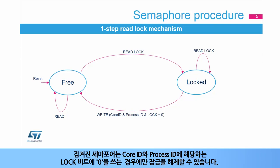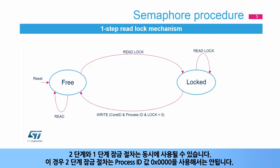A locked semaphore can only be unlocked by writing the lock bit to 0 with the corresponding core ID and process ID. The two-step and one-step lock procedures can be used concurrently. In this case, the two-step lock procedure must not use process ID value 0x0000.